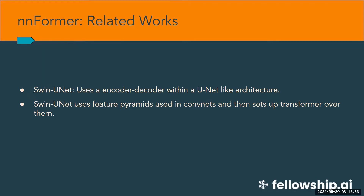The next approach captured convnet features into transformers, like the Swin Transformer — a hierarchical transformer whose representation is computed with shifted windows, similar to a normal convolution layer. The shifted window scheme brings greater efficiency by limiting self-attention computation to non-overlapping local windows. SwinUNet utilizes these hierarchical transformer blocks to construct the encoder and decoder within a UNet-like architecture.